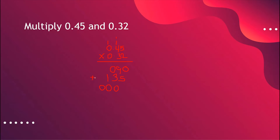Let's add them all. We have zero, fourteen — carry one — we have four, and we have one. Don't forget to bring down zero. Since we already have our product, we're going to place our decimal point. Let's count how many decimal places we have: one, two, three, four — so four decimal places. Let's count four places to the left: one, two, three, four. This will be the position of our decimal point and our final answer.